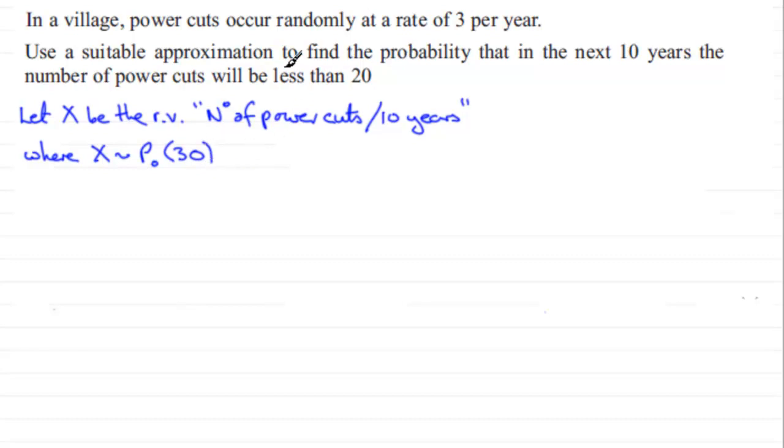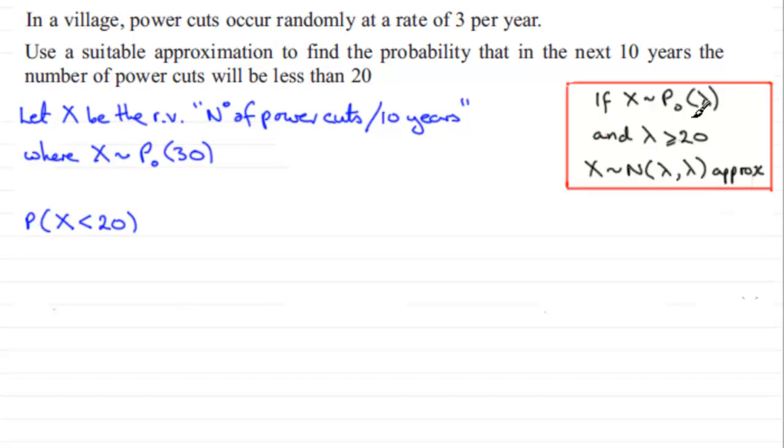Now we've got to work out the probability that the number of power cuts will be less than 20. So we're looking for the probability that x is less than 20. But it says using a suitable approximation. You should be familiar with the approximation, I'll just give you a quick recap.